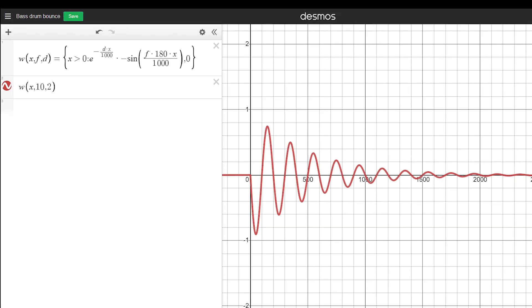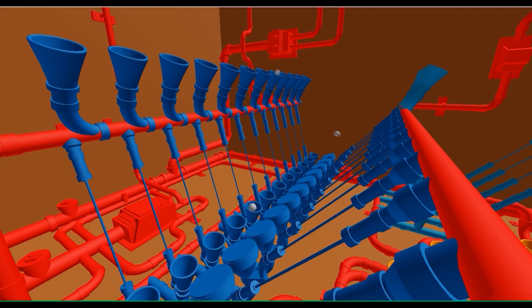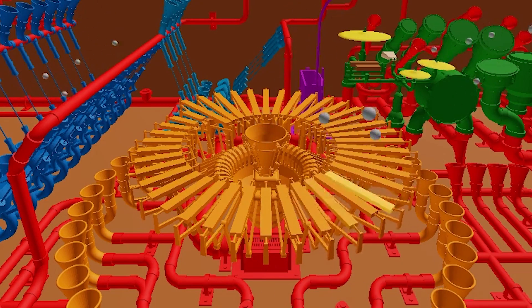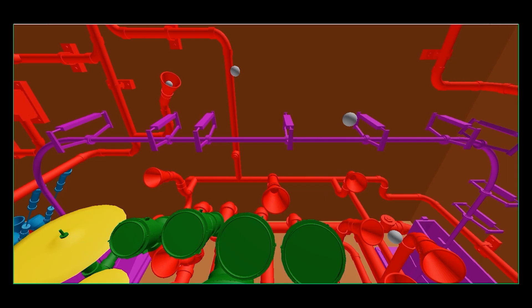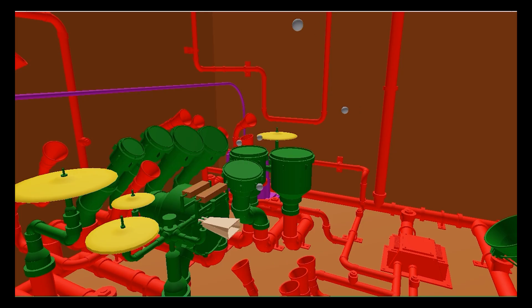And this function doesn't just model the strings, by the way. Any oscillating instrument after getting hit by a marble uses this function. The strings, the vibraphone arms because they bounce, the tubular bells, the marimba blocks, even the drums and the cymbals, they all use this function.